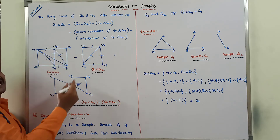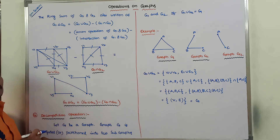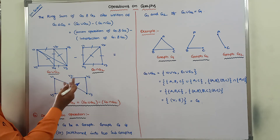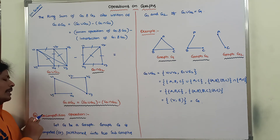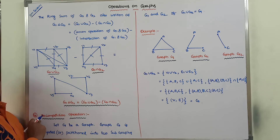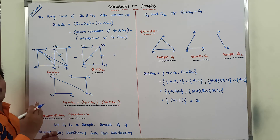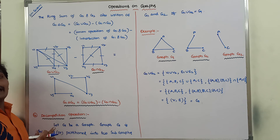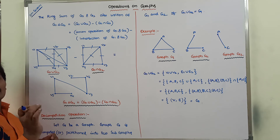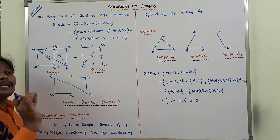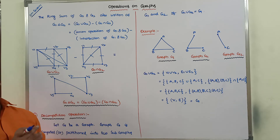This is the ring sum G1 delta G2 operation. This is the simplest operation when compared to the previous discussion. The fourth operation is the decomposition operation. Decomposition operation is nothing but a partition operation.